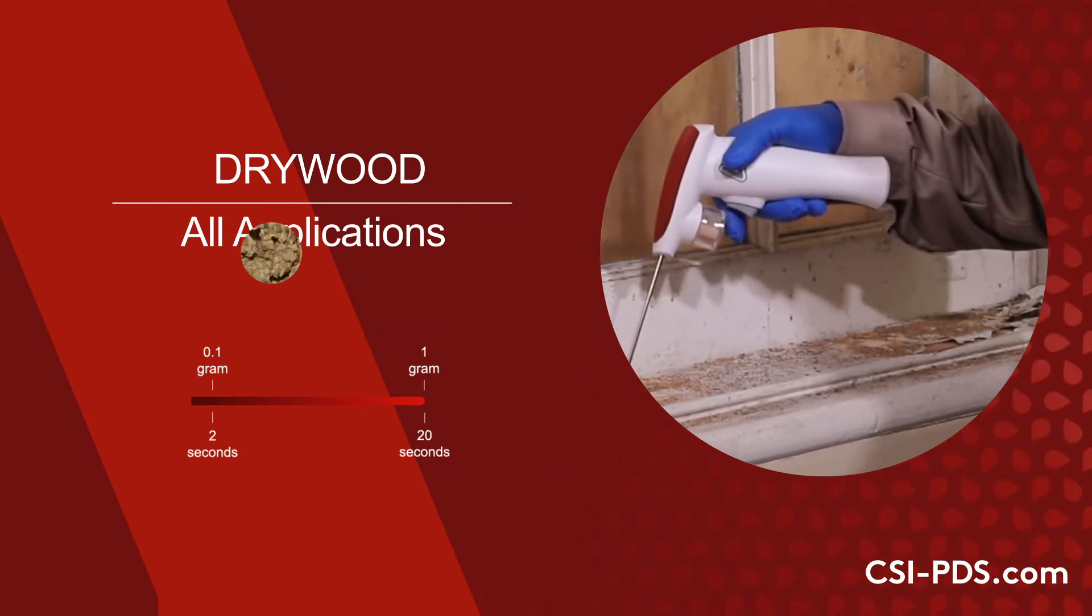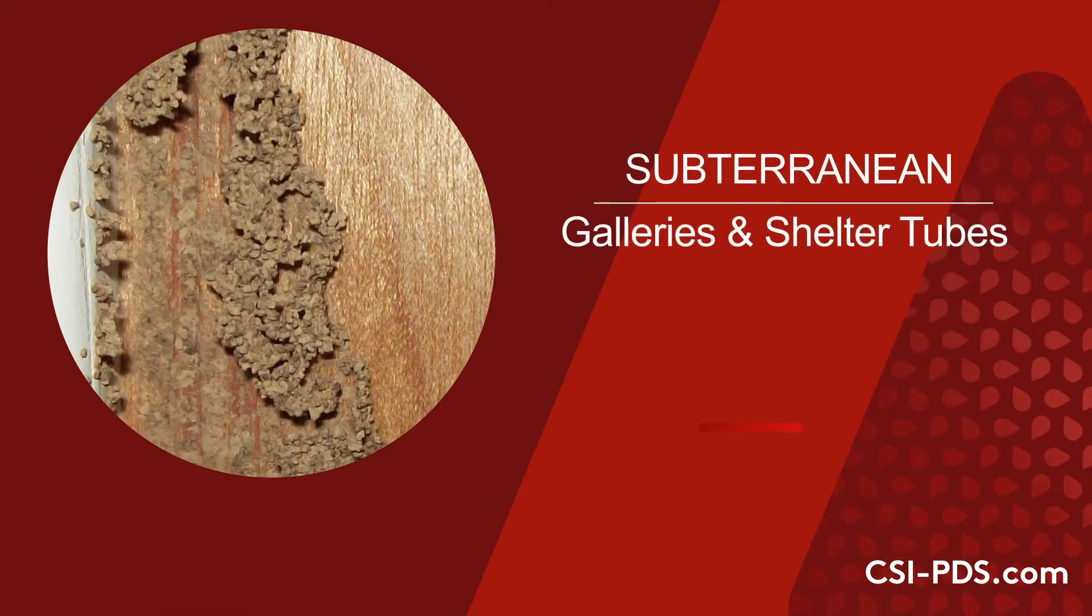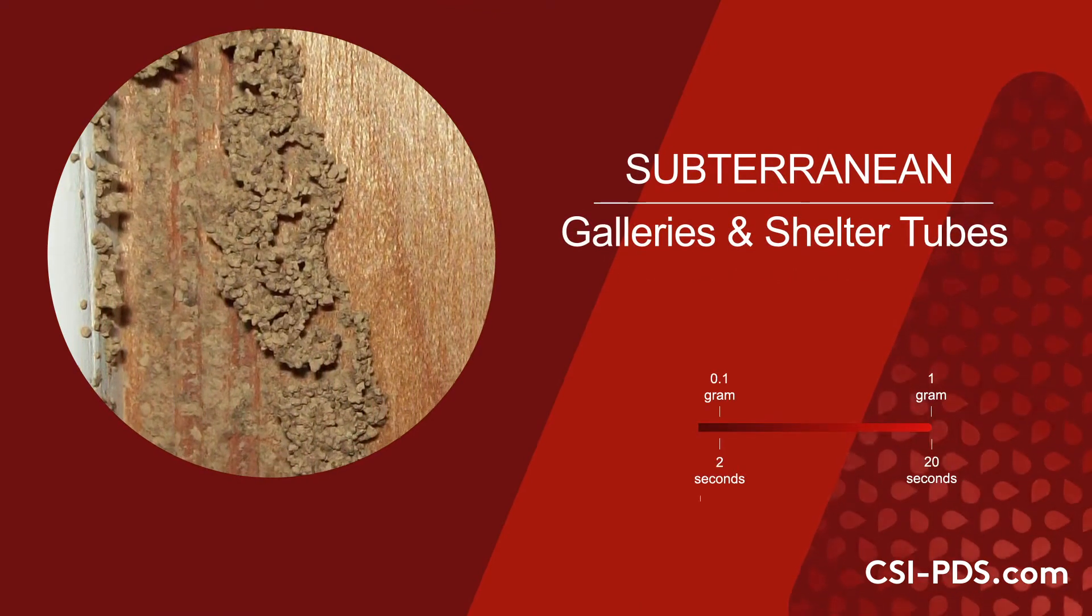To make applications into subterranean termite shelter tubes and feeding galleries, use the same application rate of 2 to 20 seconds.